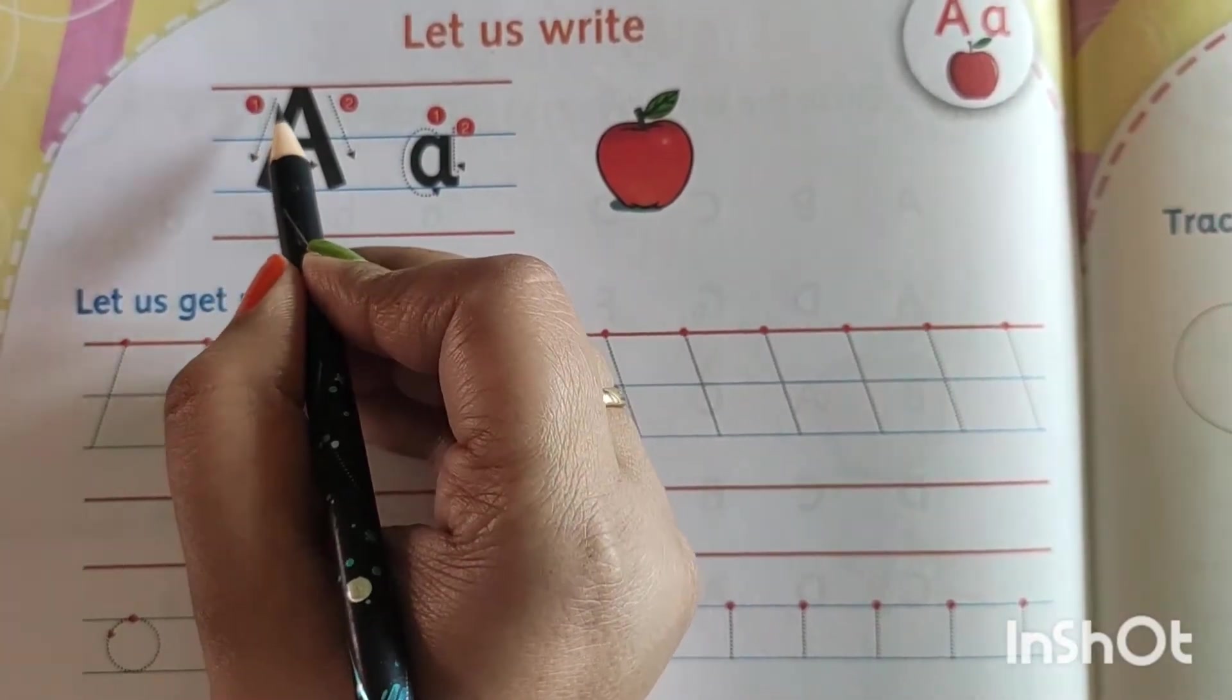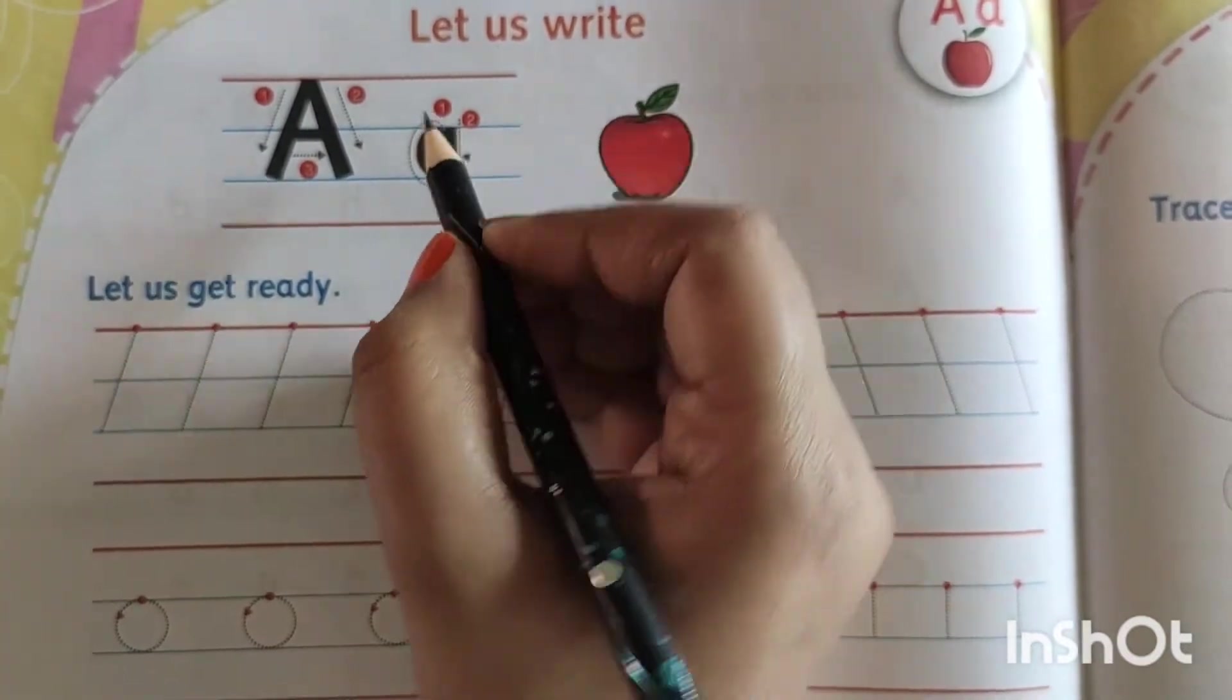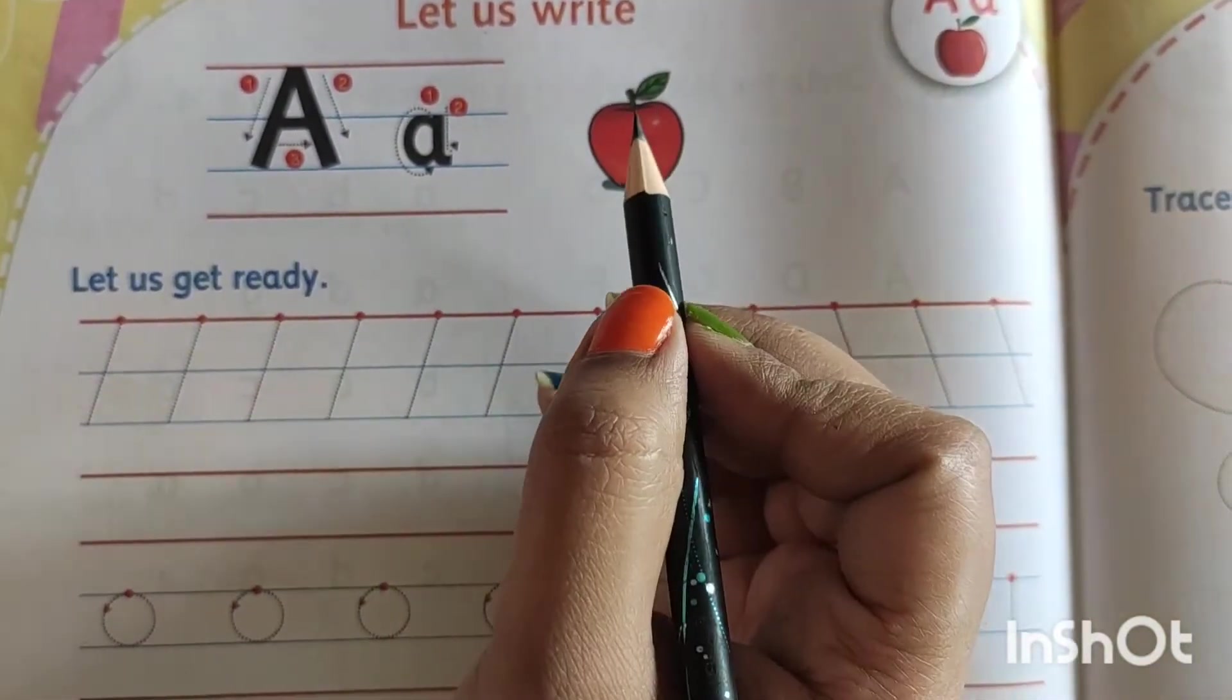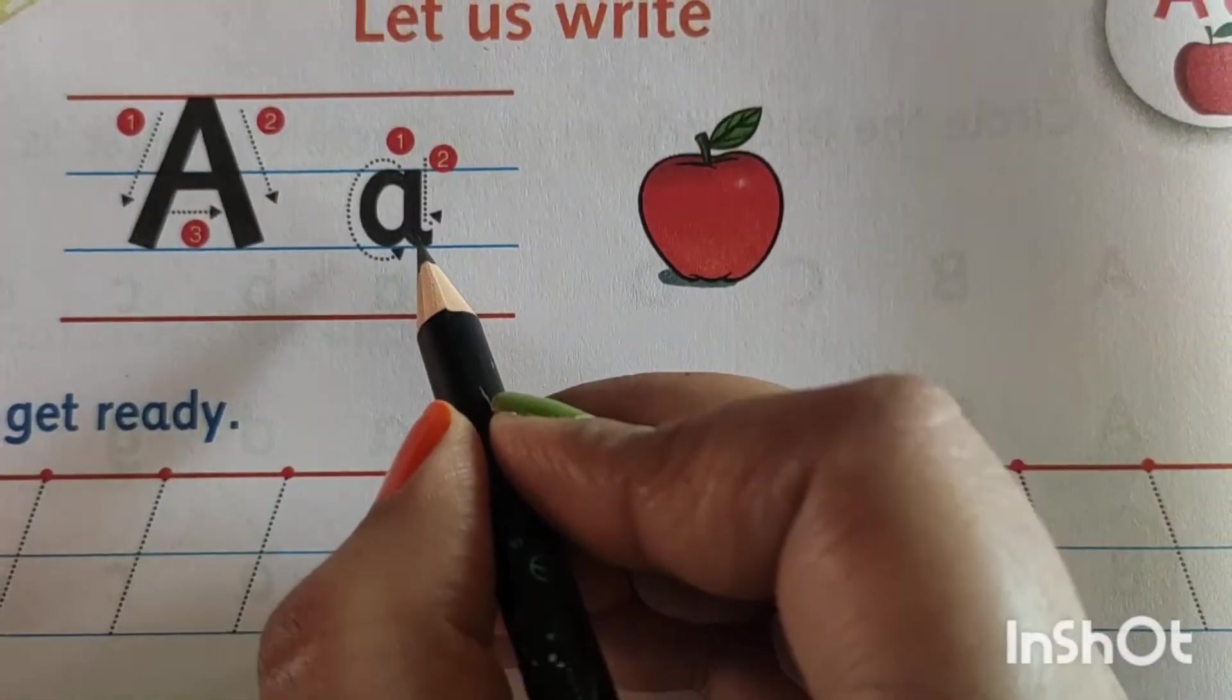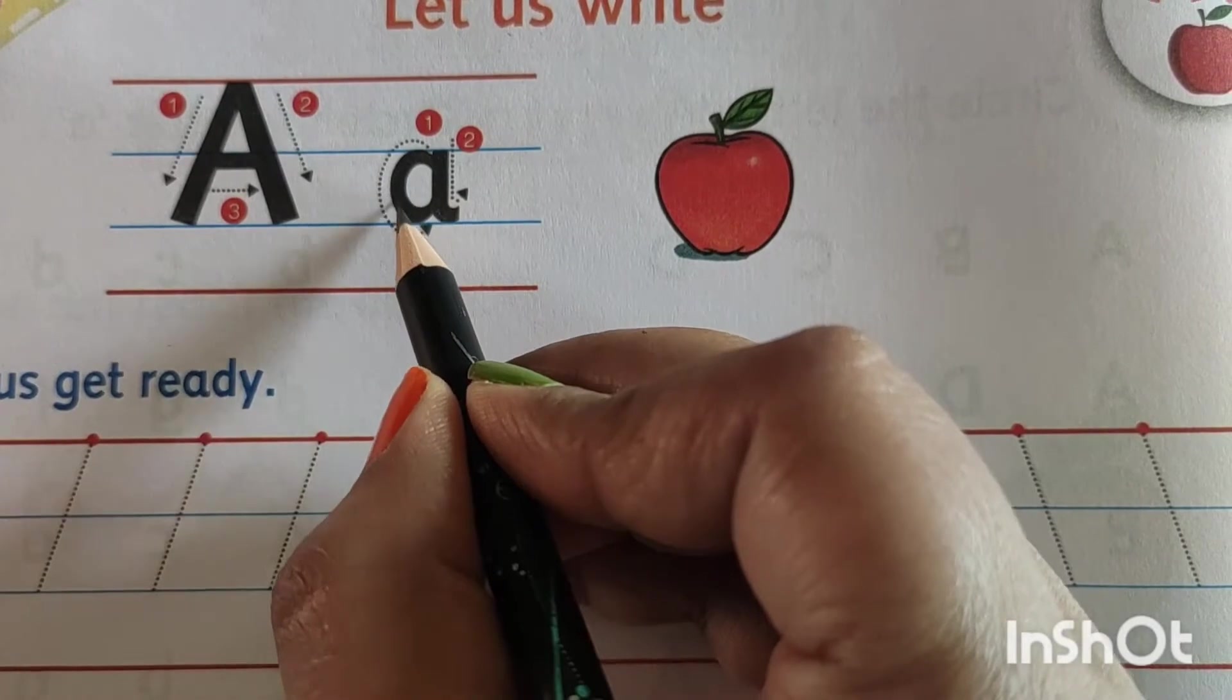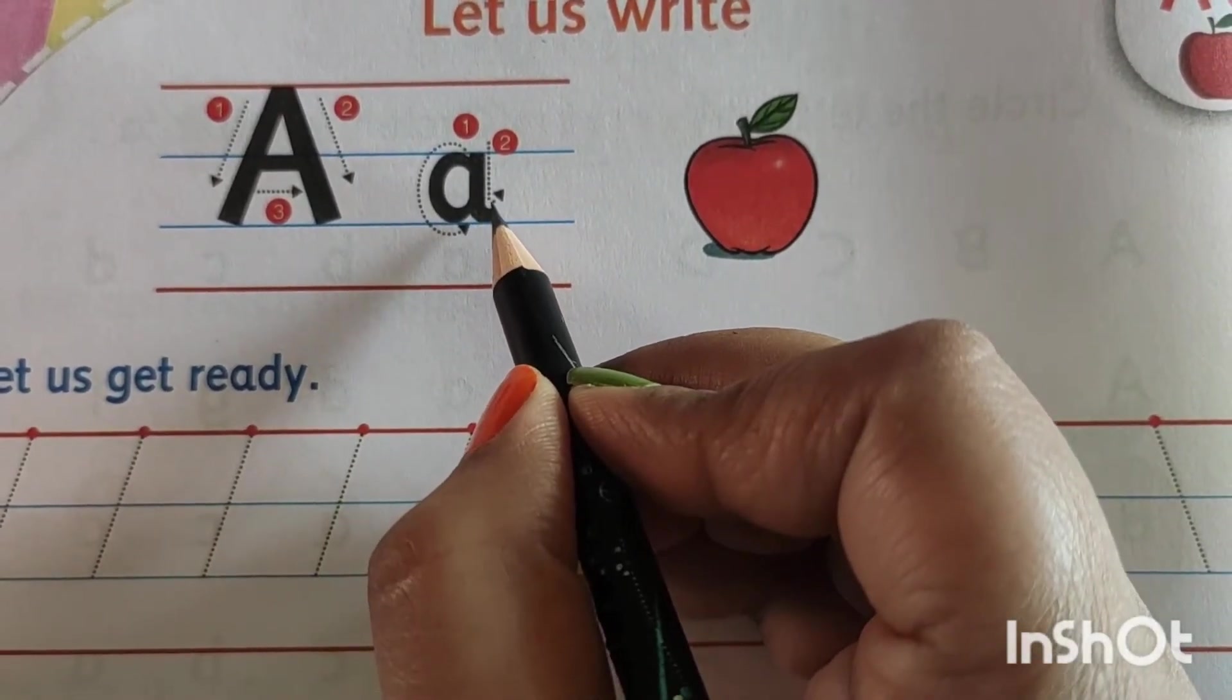You see number 1 here the line goes. Number 2 same thing opposite side. And number 3 that sleeping line. And small a. For small a you have to make a half circle at first. Then standing line and little bit curve.